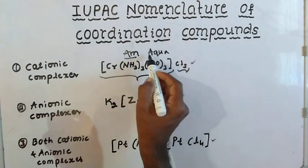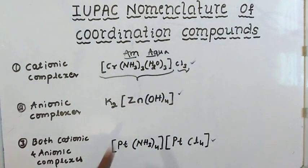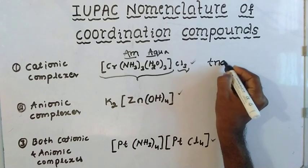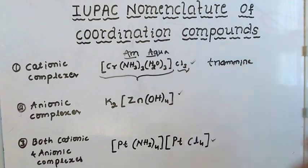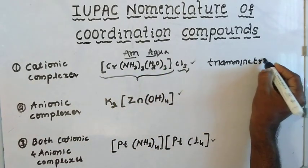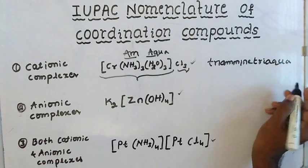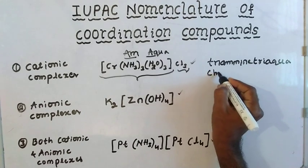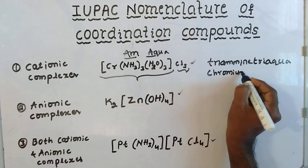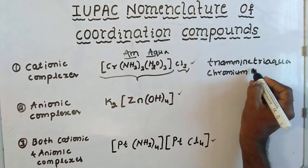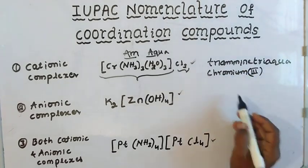We have ammonia — that gives triamine. Next is aqua. So in alphabetical order, we have triamine then aqua. The metal is chromium. We check the oxidation state: it is +3. So we write chromium(III) in Roman numerals. This is a cationic complex.